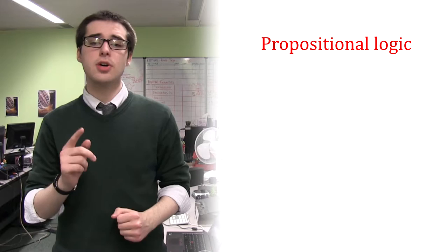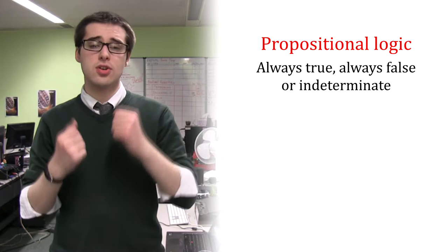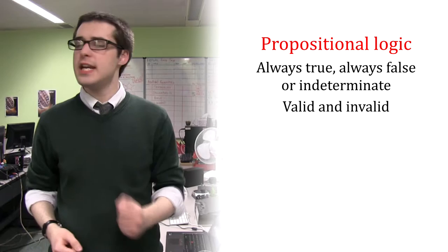Formal logic can tell us when a conclusion is always true, always false, or has an indeterminate truth value. Formal logic can also tell us when an argument is invalid and enables us to prove validity when the argument is valid.